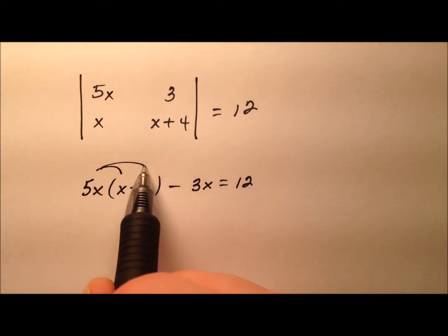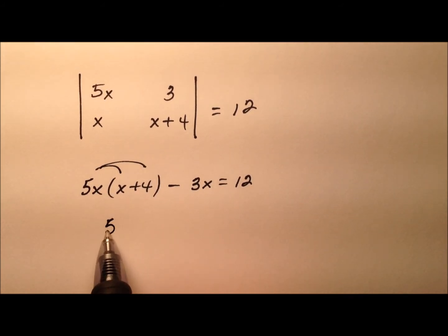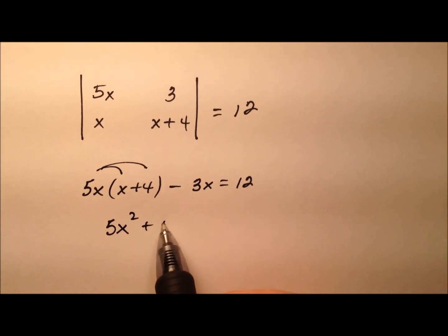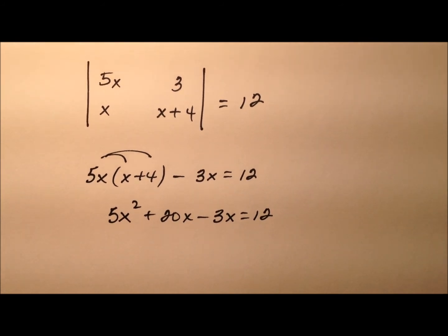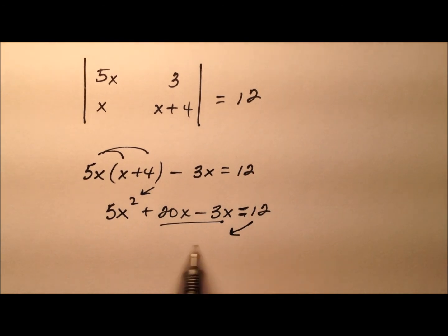So let's go ahead and distribute to get rid of these parentheses and it looks like we'll have 5x squared plus 20x minus 3x equals 12. Because it looks like we have a quadratic here, let's go ahead and set everything equal to 0, so we'll combine these like terms and push this 12 over to the left side, we'll make it negative 12.